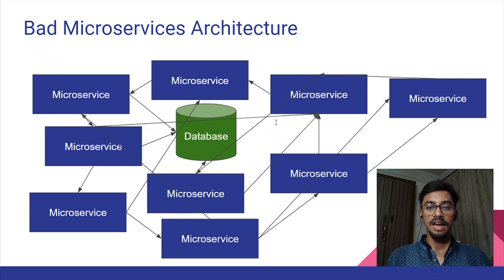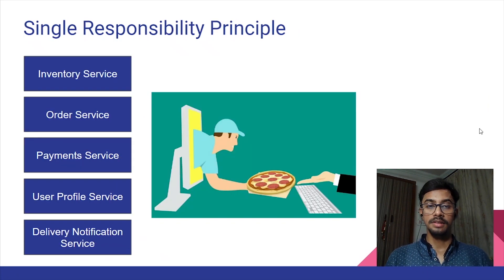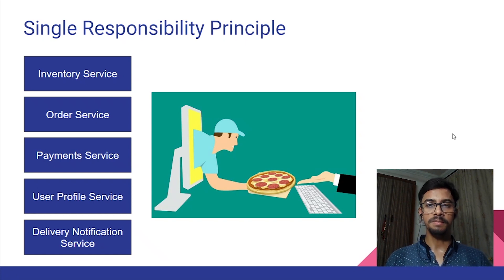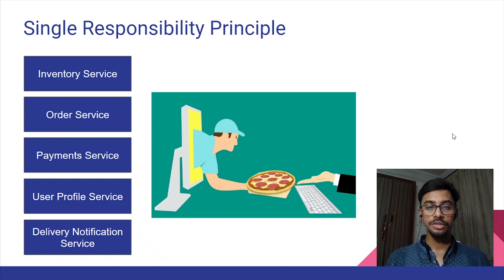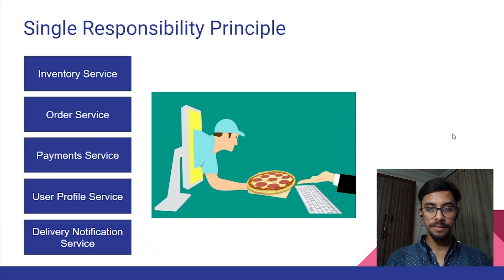These best practices and design principles will help you build microservices that are loosely coupled, distributed, and optimized to deliver the best value. The very first best practice is to follow the single responsibility principle. In short, the single responsibility principle states that a class should only have a single reason to change. This principle is generally used when writing code, but it can also be applied to microservices.